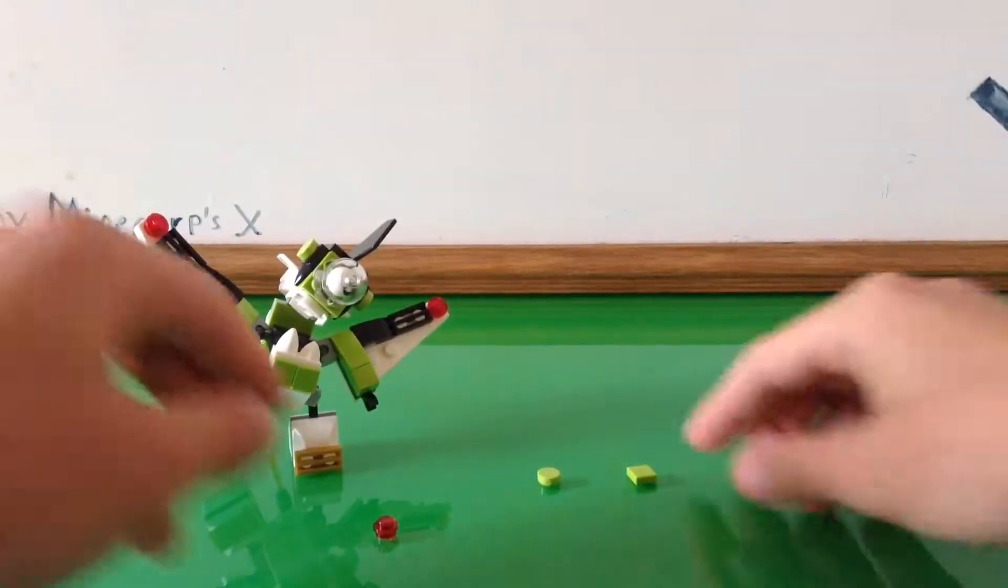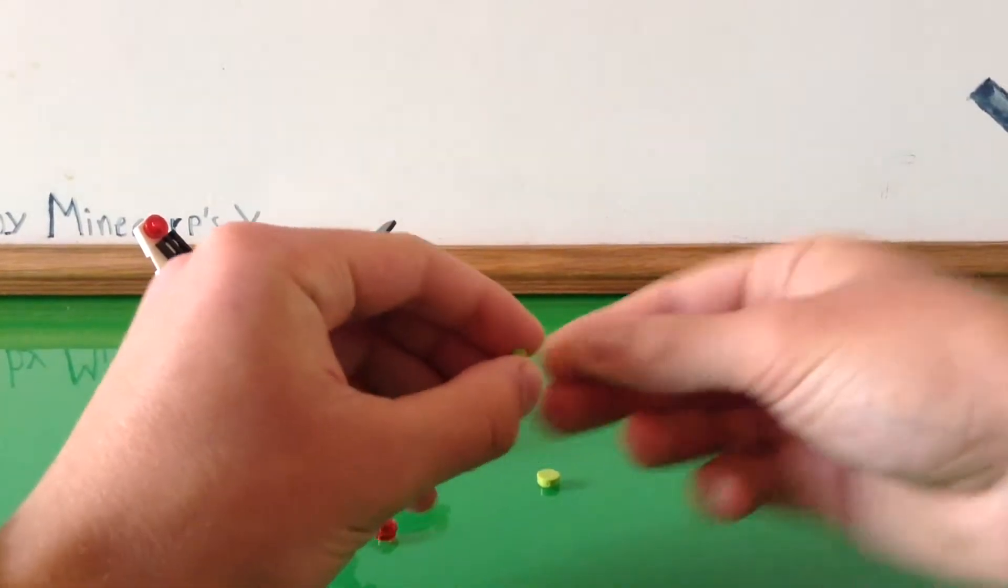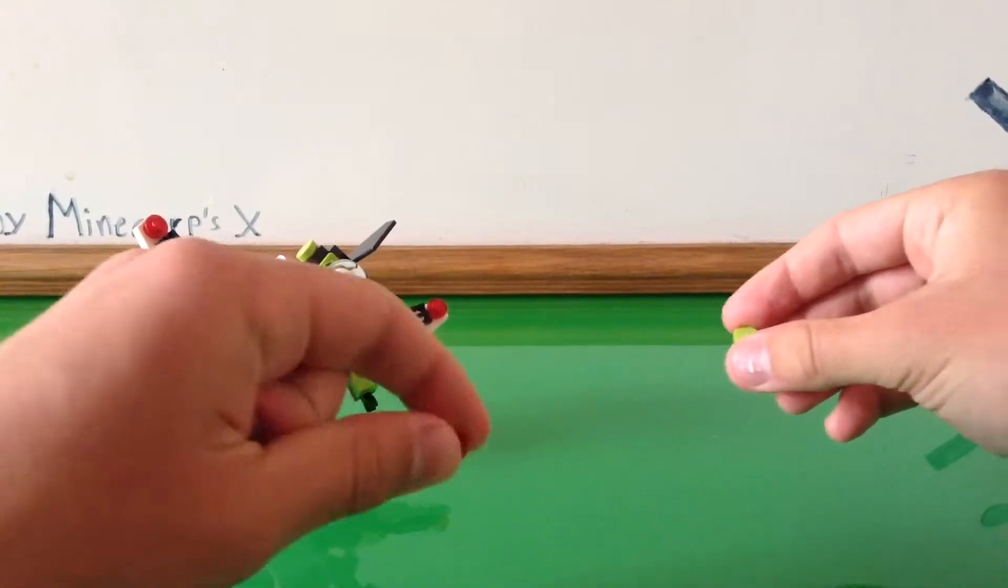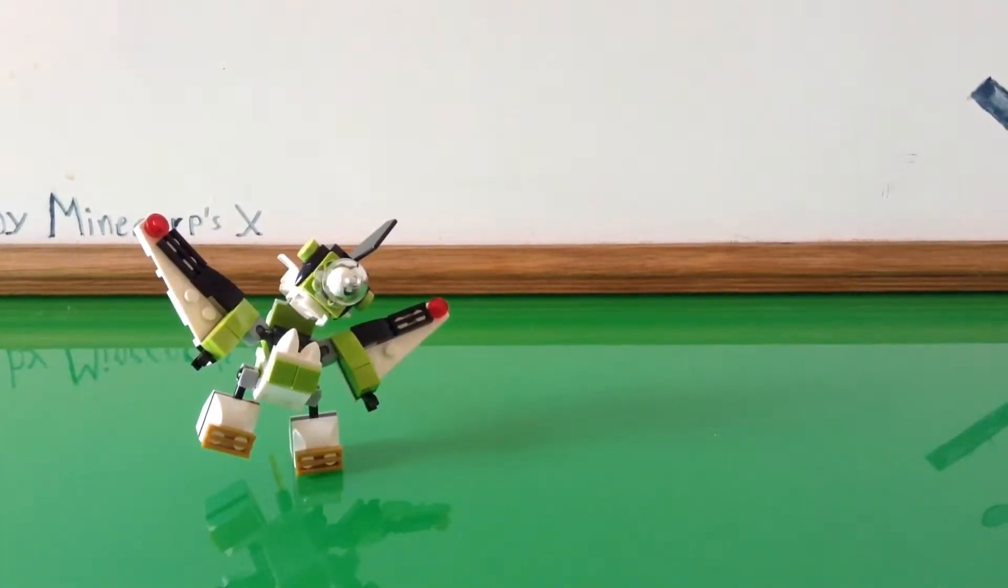Alright there he is. The extras is one green square, one green circular one by one tile, and a red translucent stud. Those are the extras.